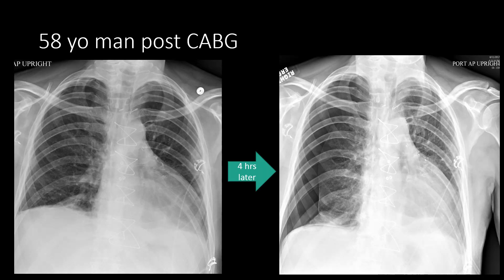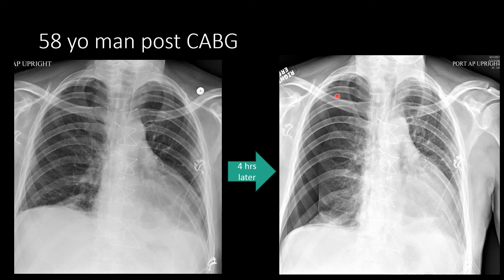Here we have a 58-year-old man who recently underwent coronary artery bypass grafting with a median sternotomy. On his initial chest radiograph immediately post-op, we don't really detect a large pneumothorax in the right lung apex. Because there was a pneumothorax, four hours later a repeat chest radiograph was obtained. This repeat chest radiograph now shows a large pneumothorax. You can see the lung is increased in density indicating partial collapse, we can see the pleural line, and we see the lucency with absent lung markings. This is a large pneumothorax that developed in just four hours.